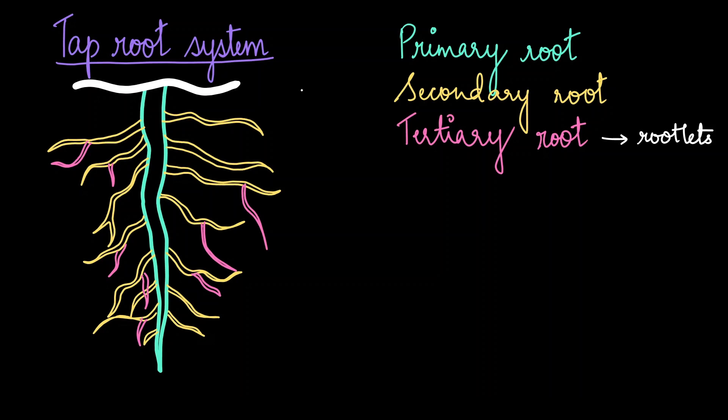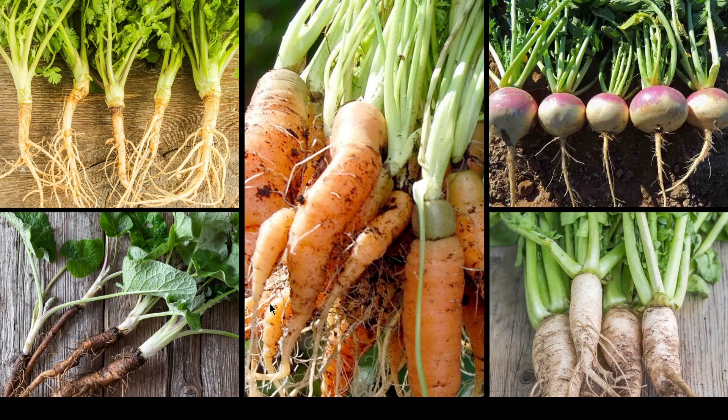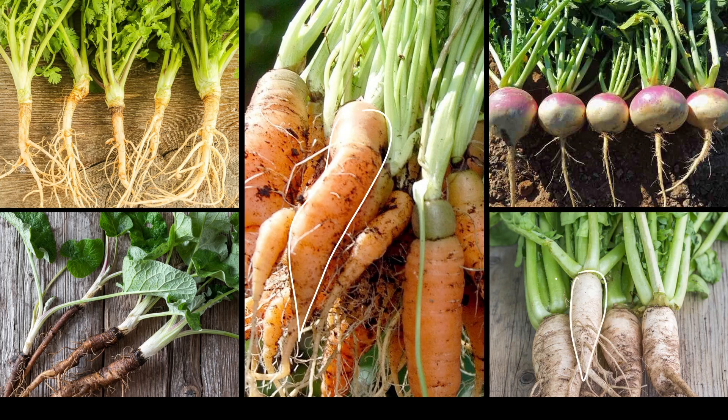Tap roots are usually seen in dicot plants. These are some of the different forms in which tap root can occur in nature. Although at first glance they look very different from each other, they are all the same tap root systems. Here I have more examples. We can see carrots and radishes have a tapering shape, but here we have a bulbous shape in the turnip. But if you look at how the roots are coming out of them, all of them follow the pattern of tap root systems.